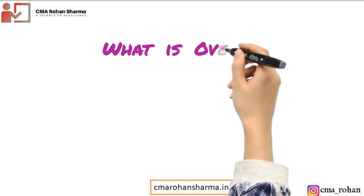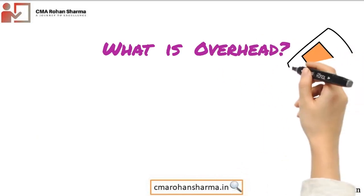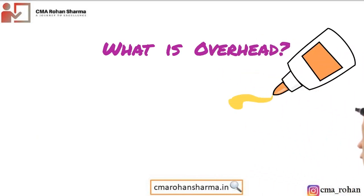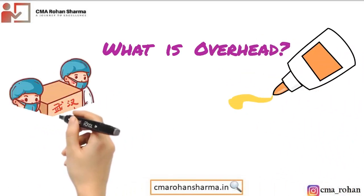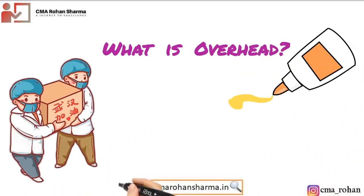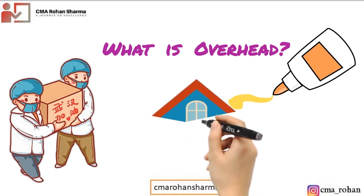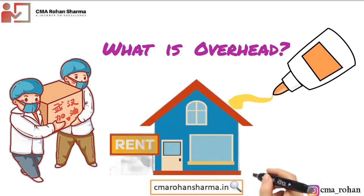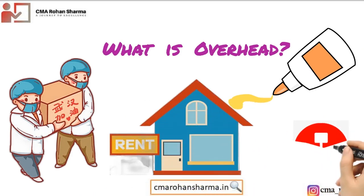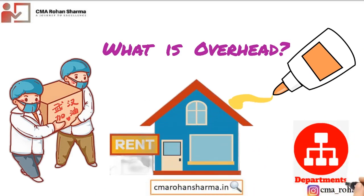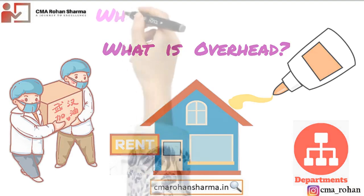What is overhead? Overheads comprise of indirect materials, indirect employee cost and indirect expenses which are not directly identifiable or allocable to a cost object.